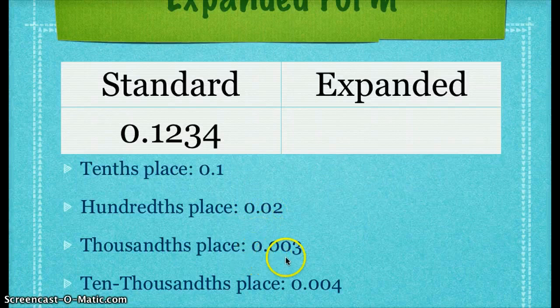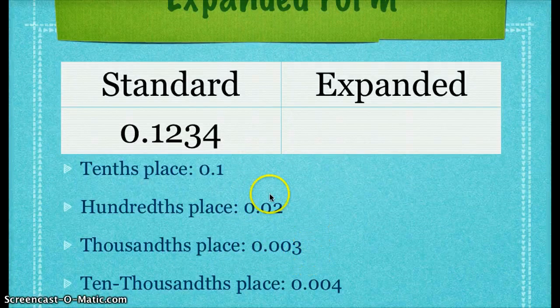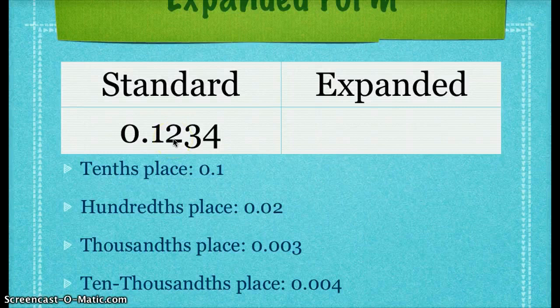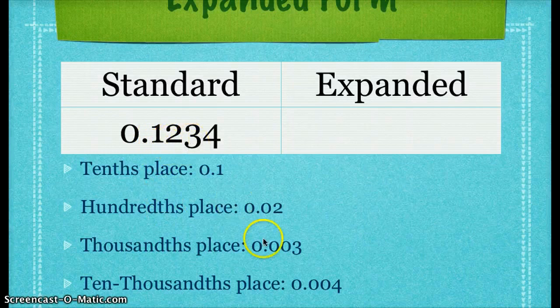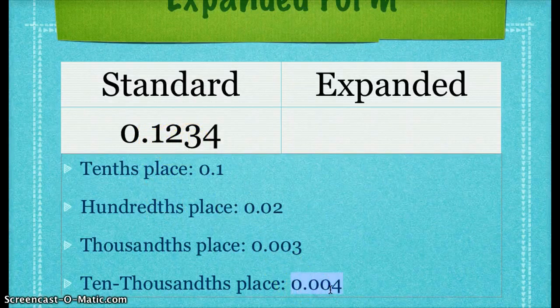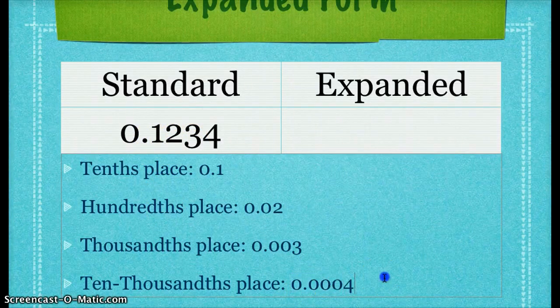In the thousandths place, I have three thousandths. I've replaced the 1 and the 2 with zeros. And in the ten-thousandths place, I have four ten-thousandths. Here I've replaced the 1, 2, and 3 all with zeros. And I can see that I want to add in a zero here to my notes. Sorry about that.